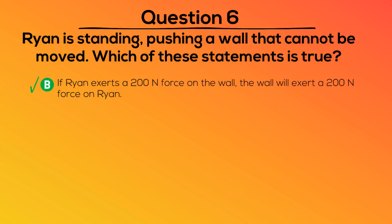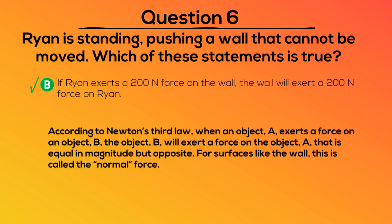The correct answer is B. According to Newton's third law, when an object A exerts a force on an object B, the object B will exert a force on the object A that is equal in magnitude but opposite. For surfaces like the wall, this is called the normal force.